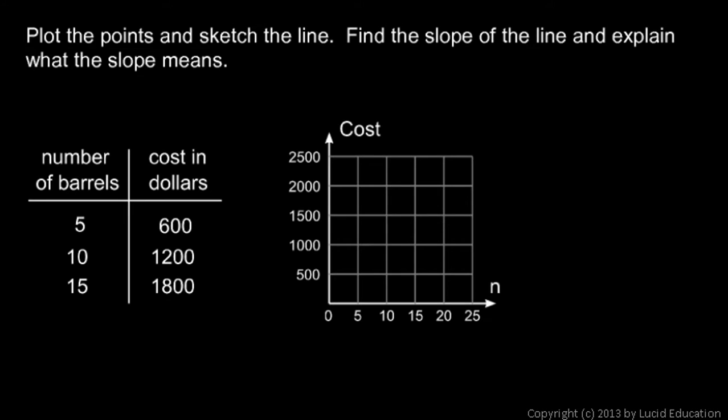Let's look at one more example. Same task here. We're told to plot the points, and sketch the line, find the slope of the line, and explain what the slope means. So this is number of barrels, and the cost in dollars. And it doesn't say it on the page, but we're talking about the barrels of oil here. This is barrels of oil, the number of barrels of oil.